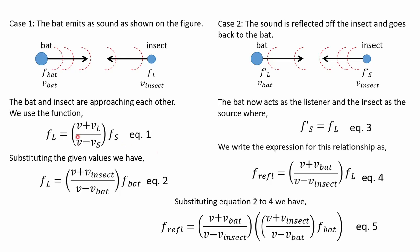We use equation one, where the numerator is large because it has a positive sign and the denominator is small, so the frequency heard by the insect will become larger. We substitute the given values: the v of the listener is v_insect and the v_source is v_bat in equation two.